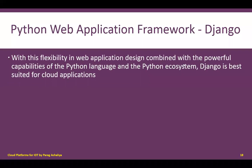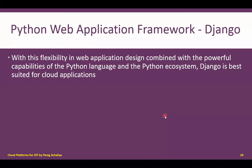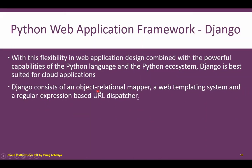Due to flexibility in web application design combined with the powerful capabilities of the Python language and ecosystem, Django is best suited for cloud and IoT applications. Python has numerous built-in functions and APIs and a very strong ecosystem, making Django very popular for IoT application development. Django consists of an object-relational mapper, a web templating system, and a regular expression-based URL dispatcher.